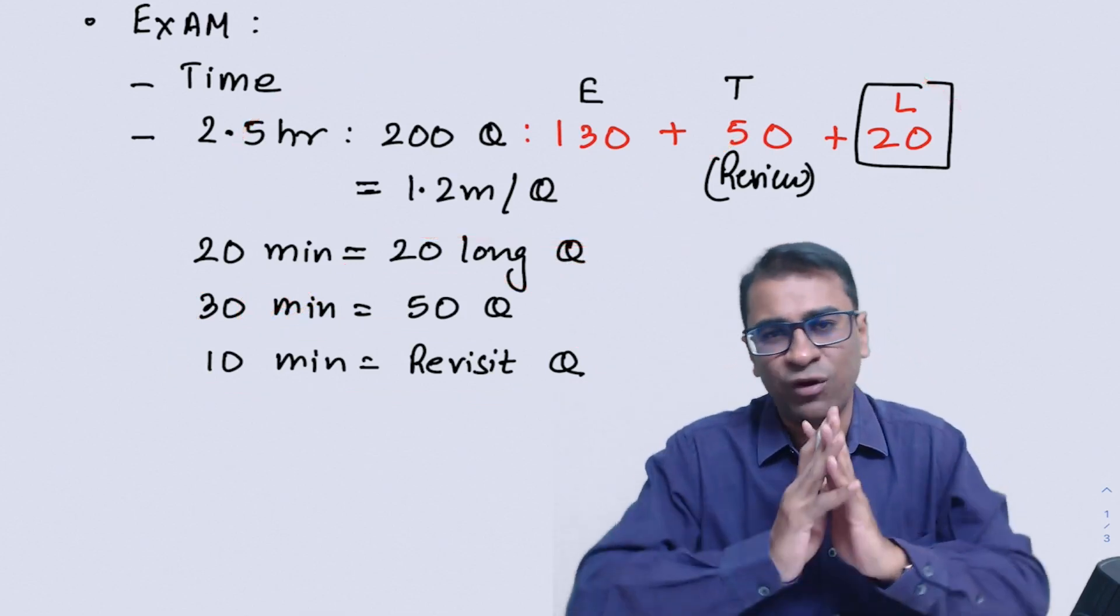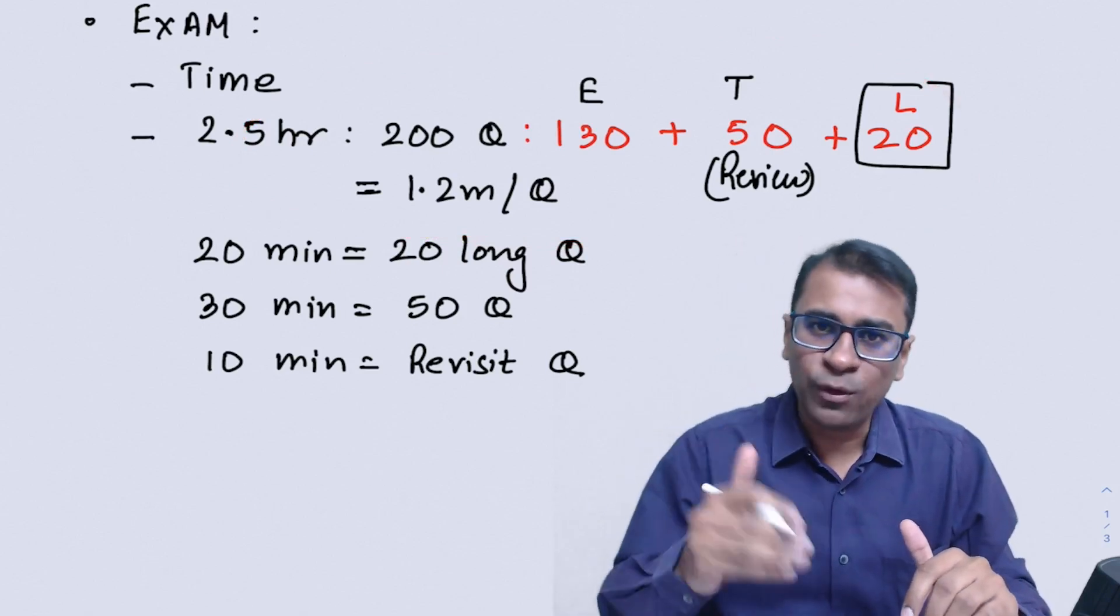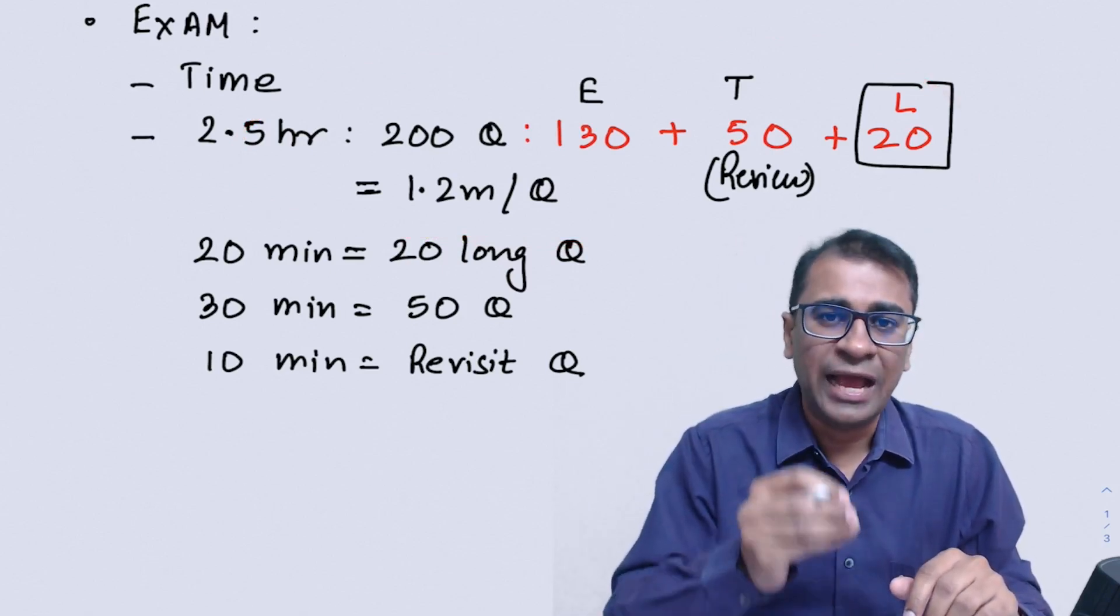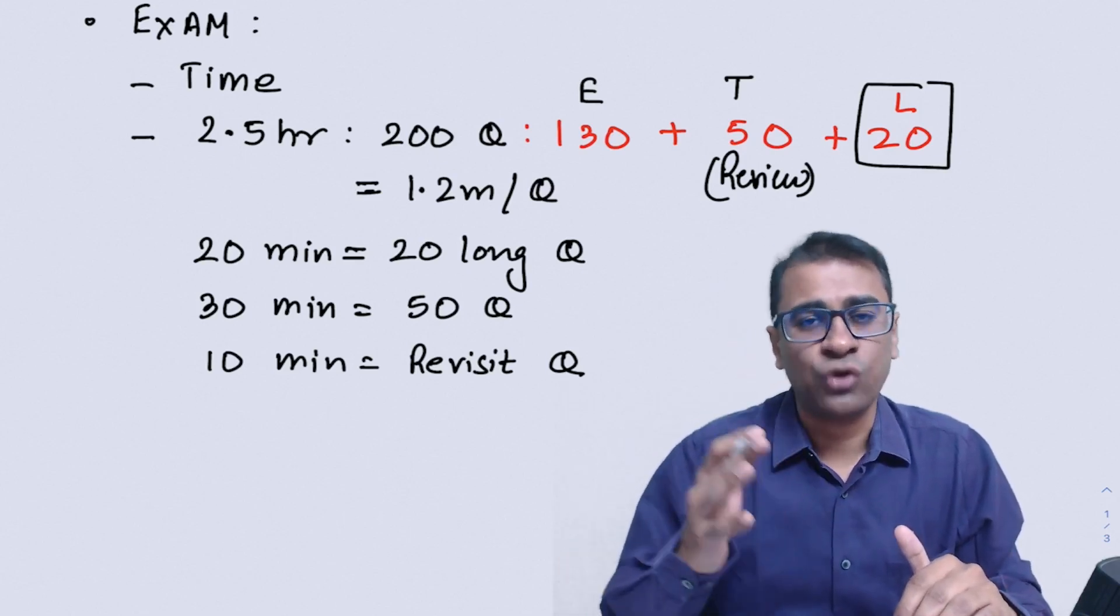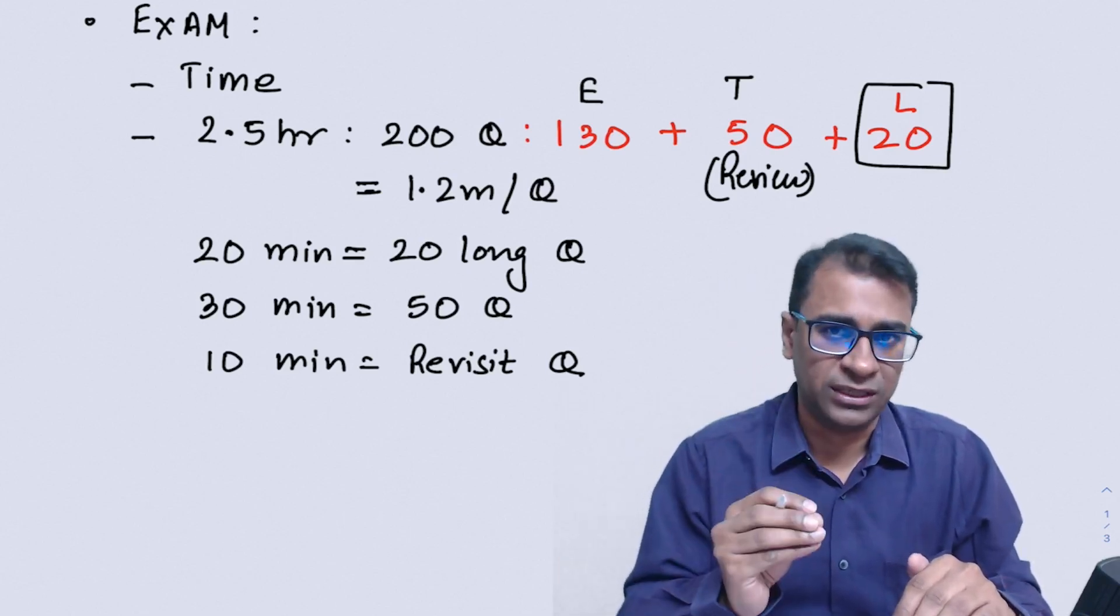And the last 10 minutes I'll make for revisiting the question of all the 200 questions again. Now my question is, sir, what I've seen in my GT is when I look into two options, I mark one of the option and then I change the answer. The change answer looks wrong. Why? That is an art of solving MCQs.